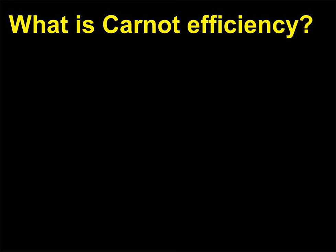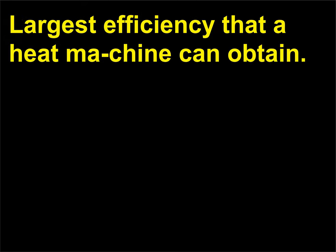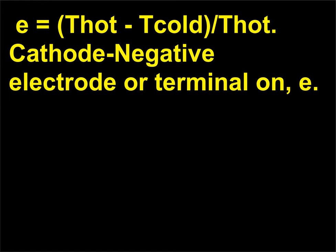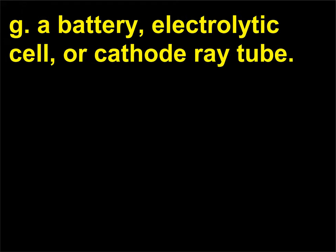What is Carnot efficiency? Largest efficiency that a heat machine can obtain. E equals T-hot minus T-cold slash T-hot. Cathode negative electrode or terminal on a battery, electrolytic cell, or cathode ray tube.